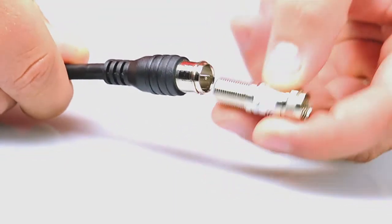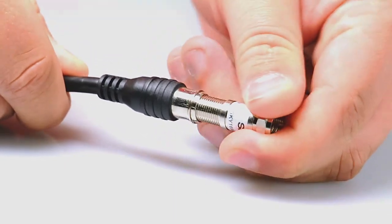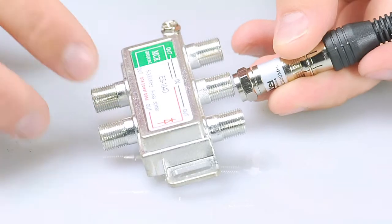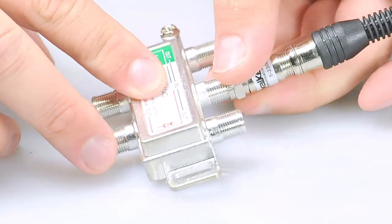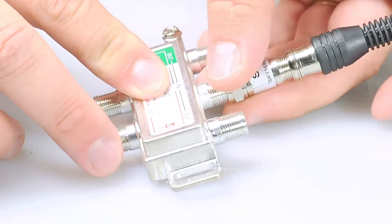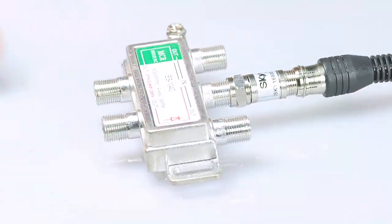This includes off-air and CATV attenuators which are offered in DC passing and blocking from 0 to 2,000 megahertz, and satellite attenuators which are DC passing from 0 to 3,000 megahertz.